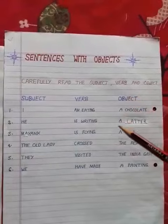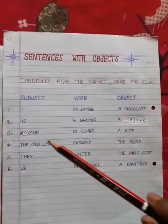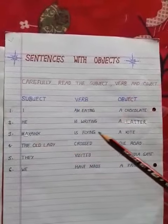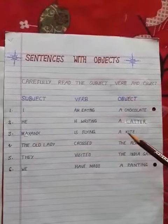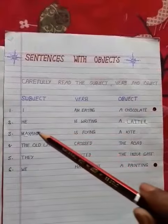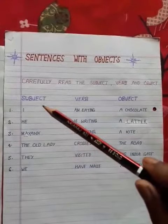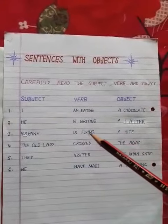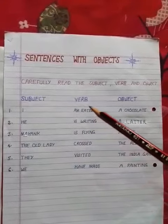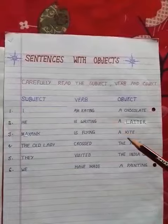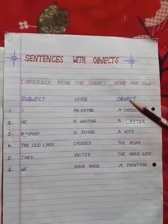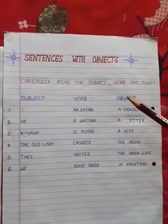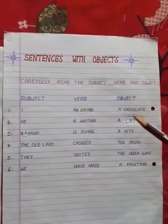3rd example: Mayank is flying a kite. Mayank: subject, is flying: verb, a kite: object.